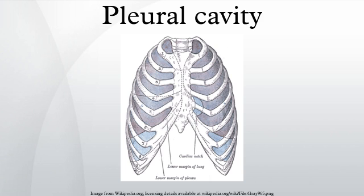The outer pleura is attached to the chest wall. The inner pleura covers the lungs and adjoining structures via blood vessels, bronchi and nerves. The parietal pleura is highly sensitive to pain, while the visceral pleura is not, due to its lack of sensory innervation structure.